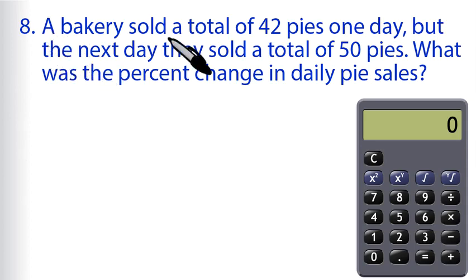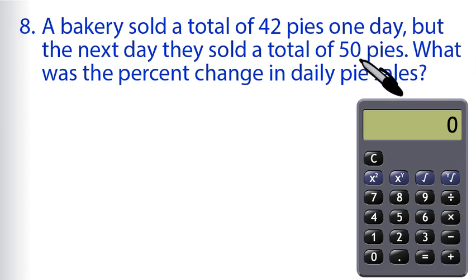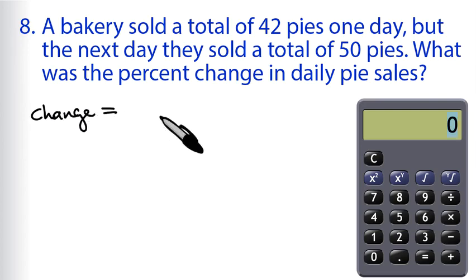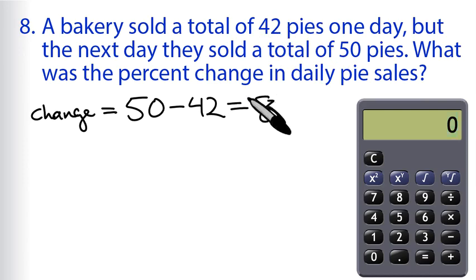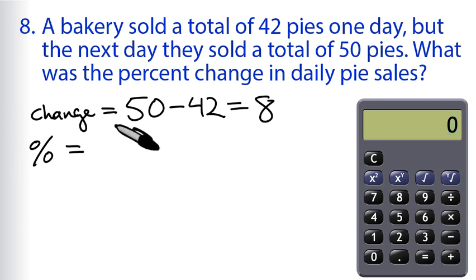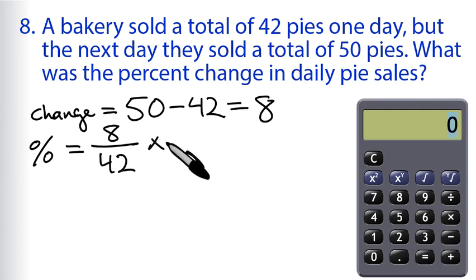For problem 8, a bakery sold a total of 42 pies one day, but the next day they sold a total of 50 pies. What was the percent change in daily pie sales? Once again, we're not told the absolute change — just the total on both days. To find the change, take the new value, 50, and subtract the original amount, 42. So 50 minus 42 is 8. That is our absolute change. Now: percent change equals 8 divided by 42, multiplied by 100.